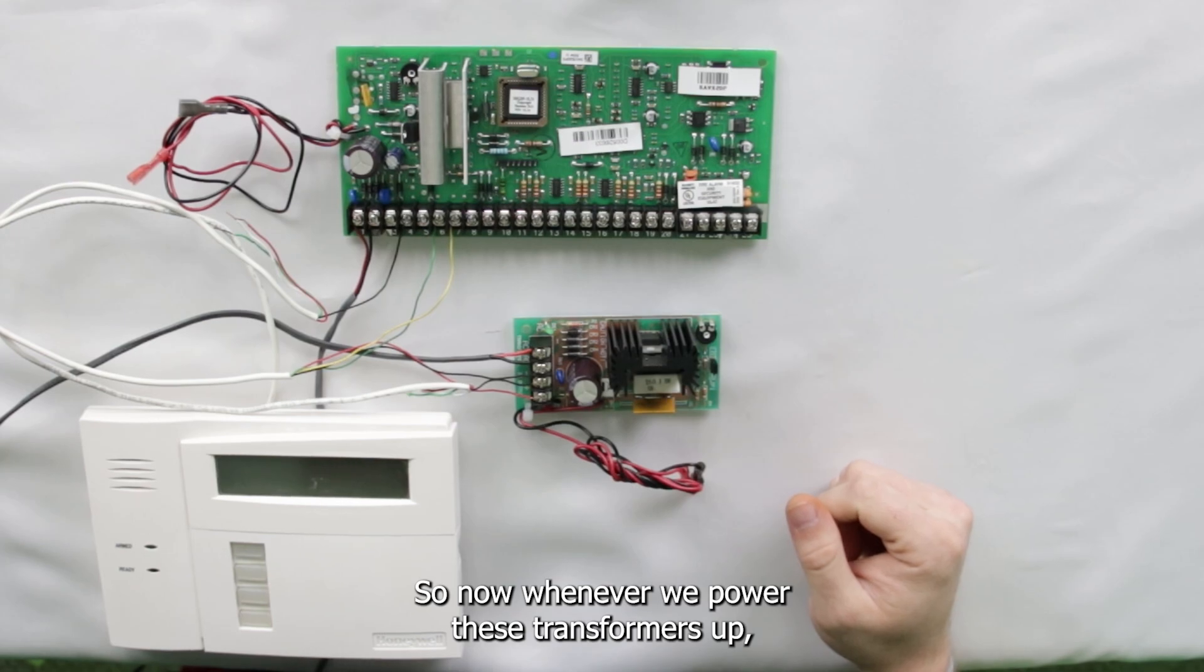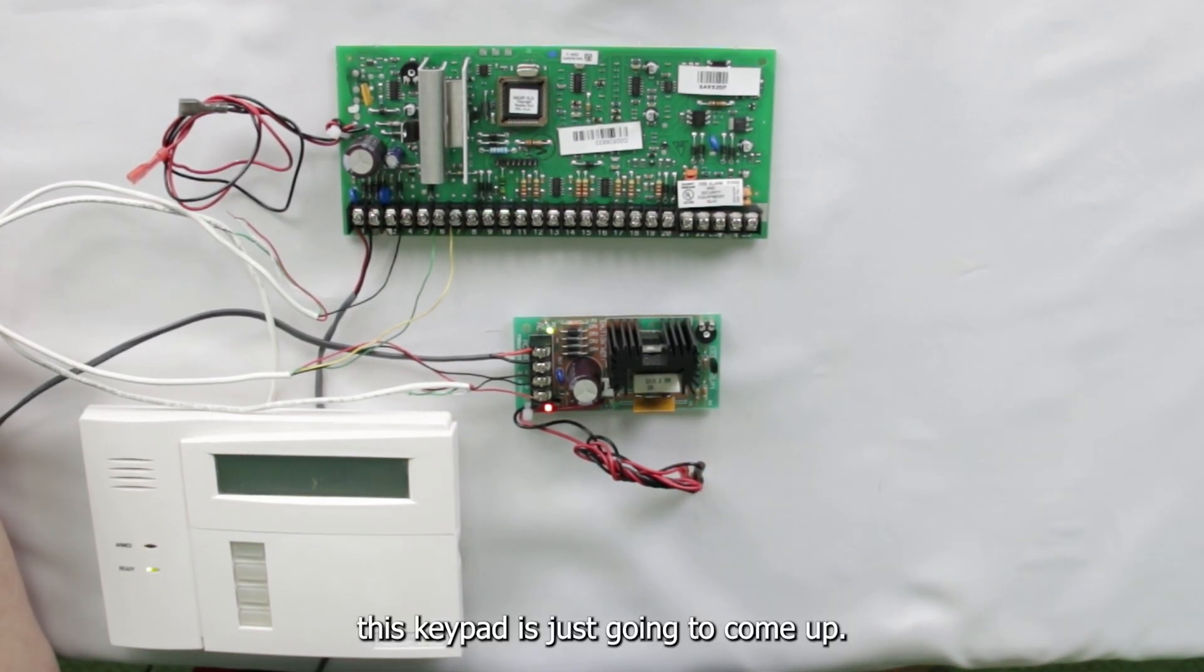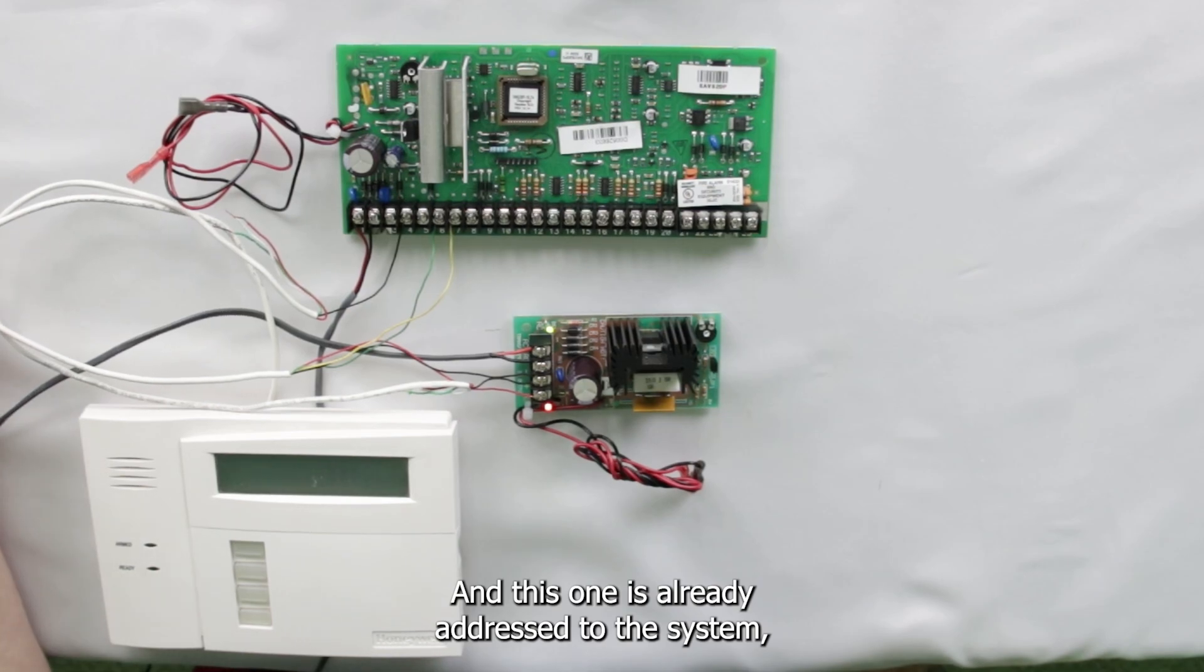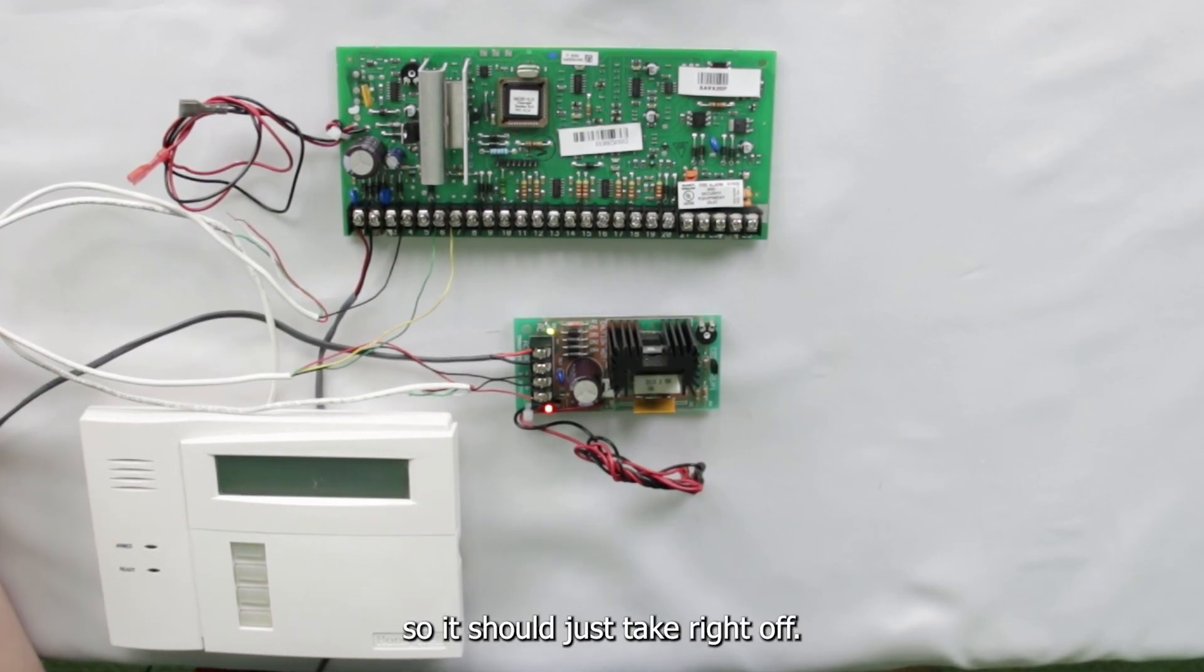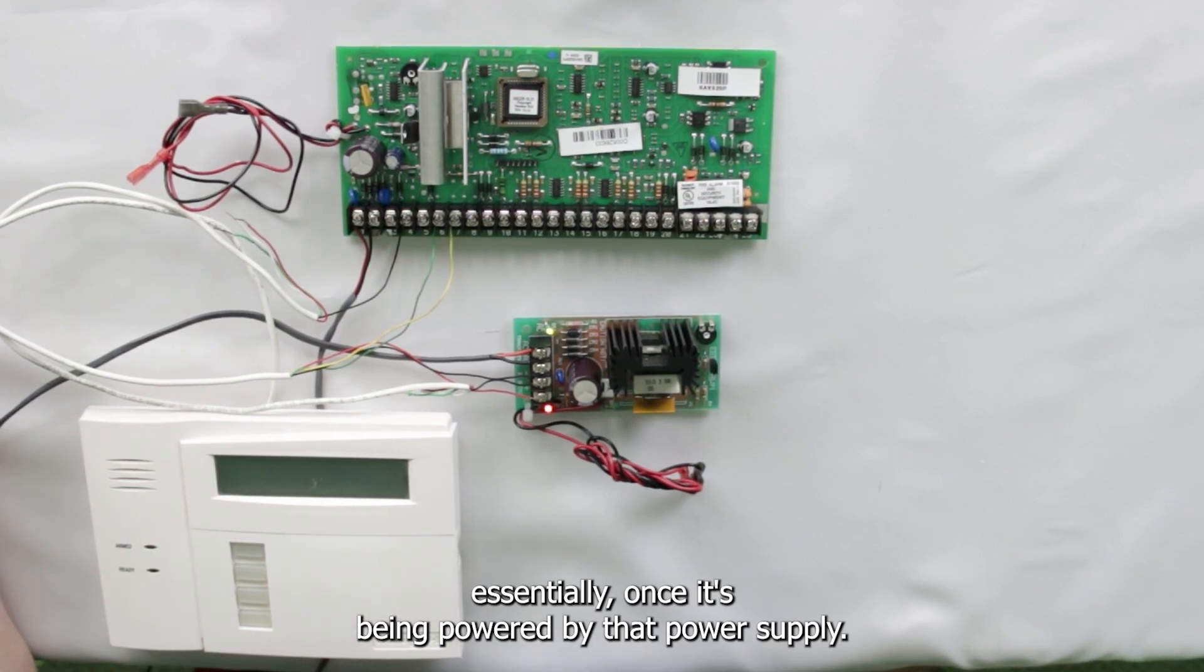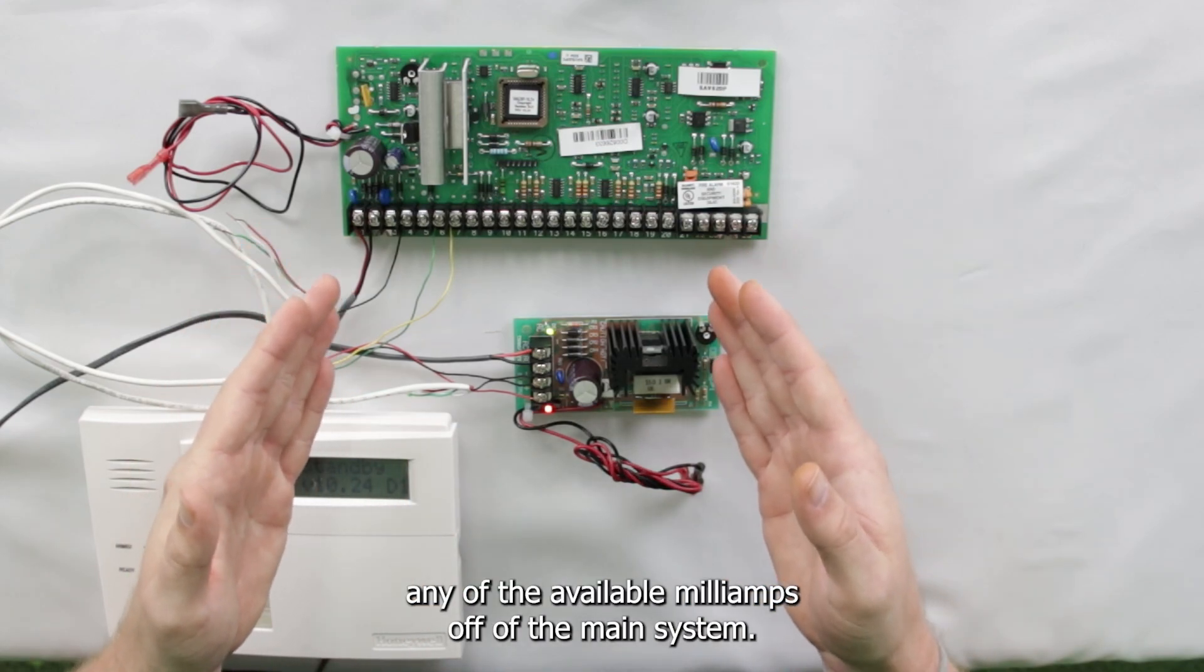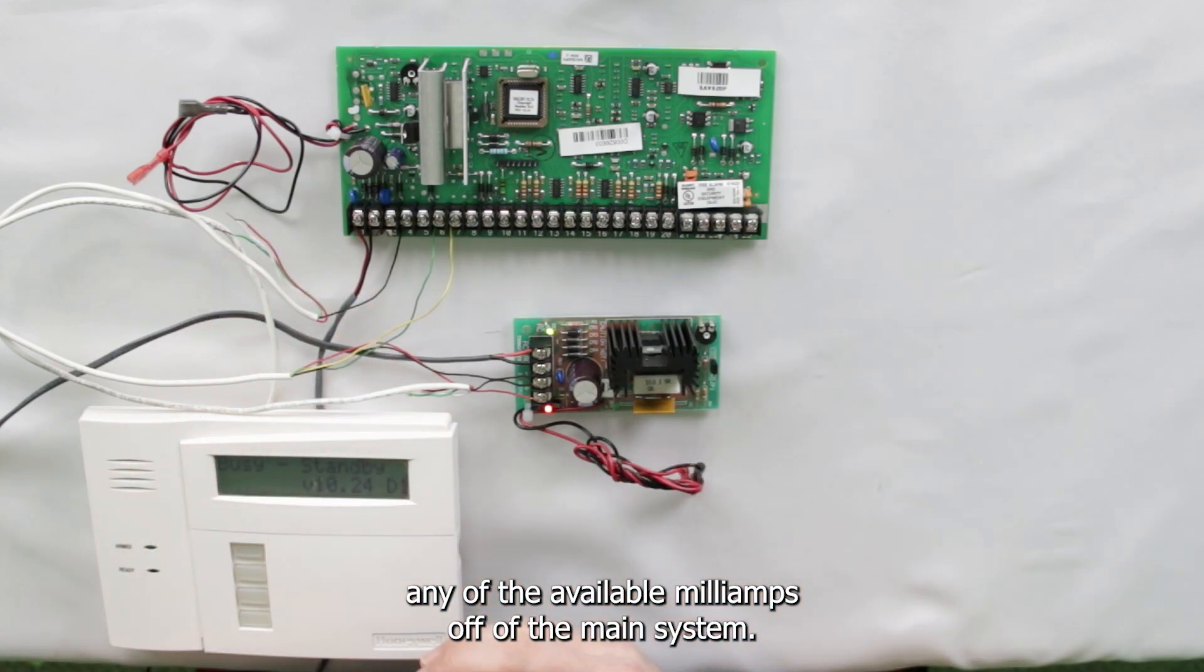So now, whenever we power these transformers up, this keypad is just going to come up and this one is already addressed to the system. So it should just take right off. Once it's being powered by that power supply, it's just going to use power from that rather than taking any of the available milliamps off of the main system.